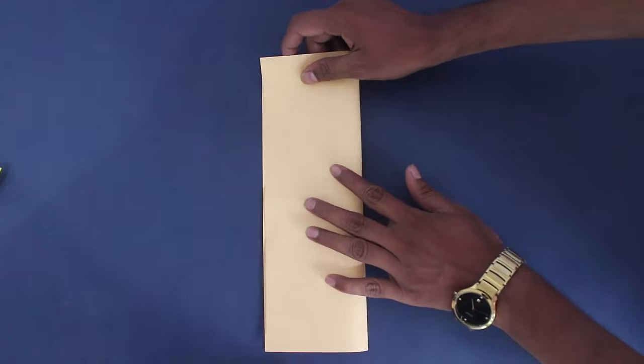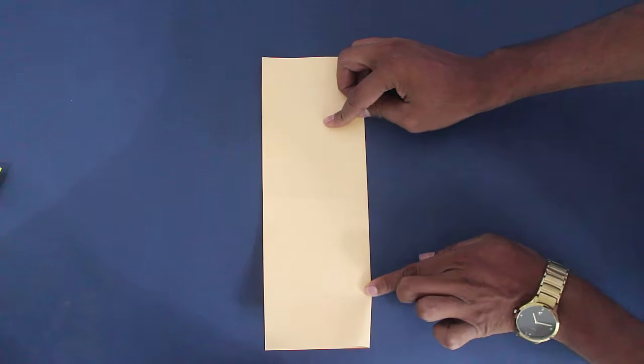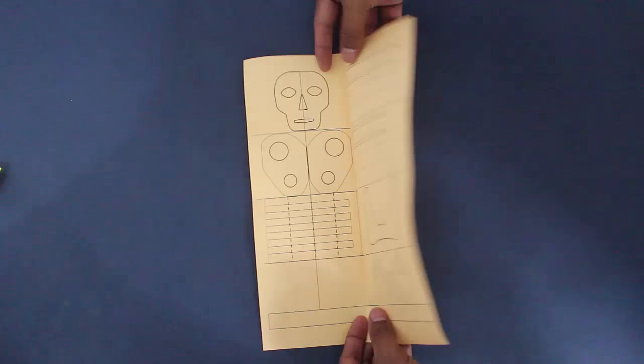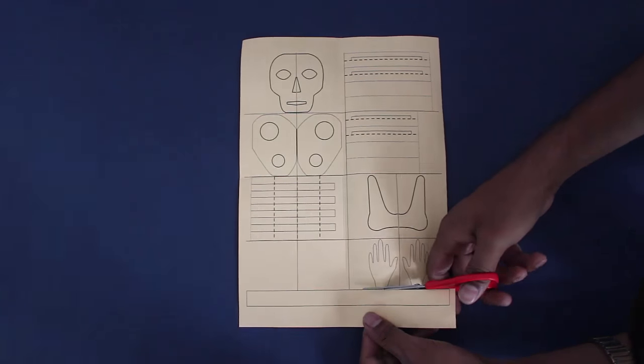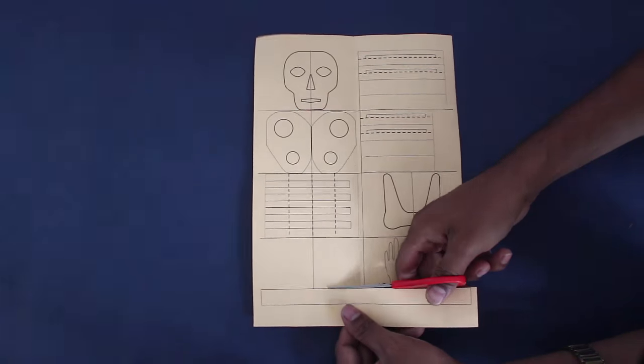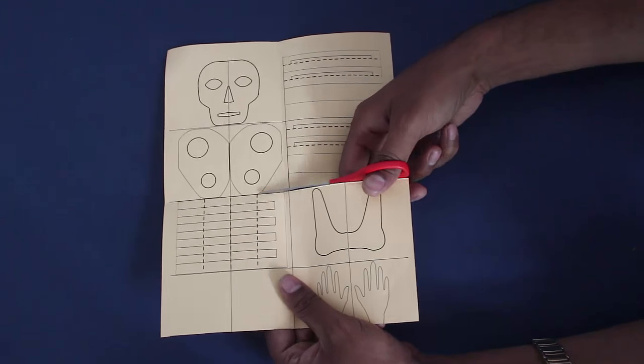Then cut out all the individual rectangles. You will find that there are a total of 9 rectangles. The bottom strip will be used to stick the skeleton together.